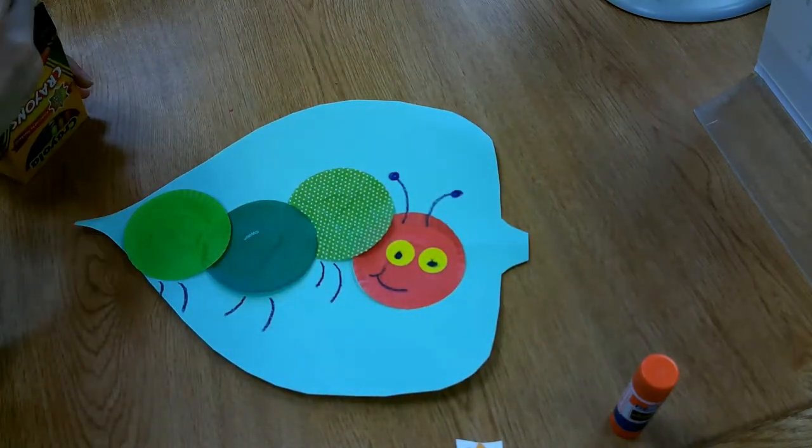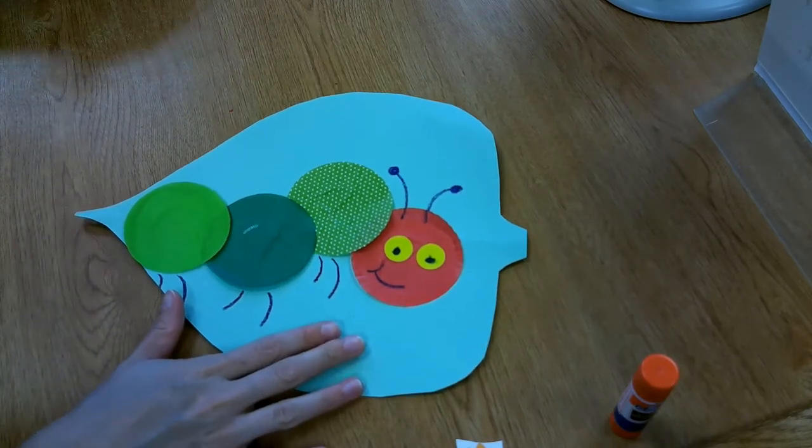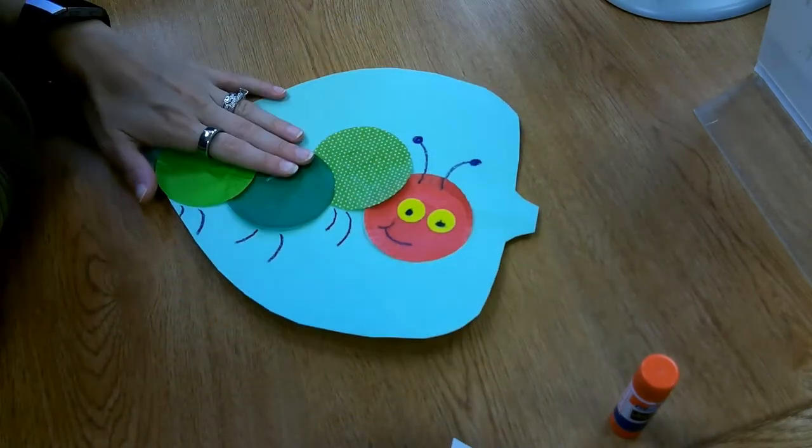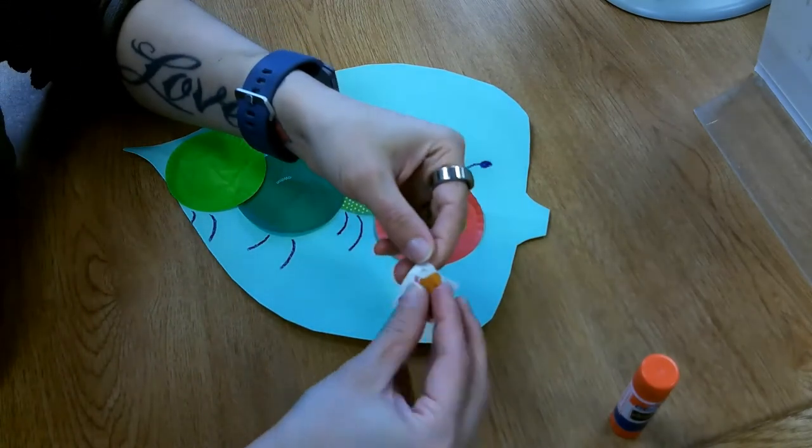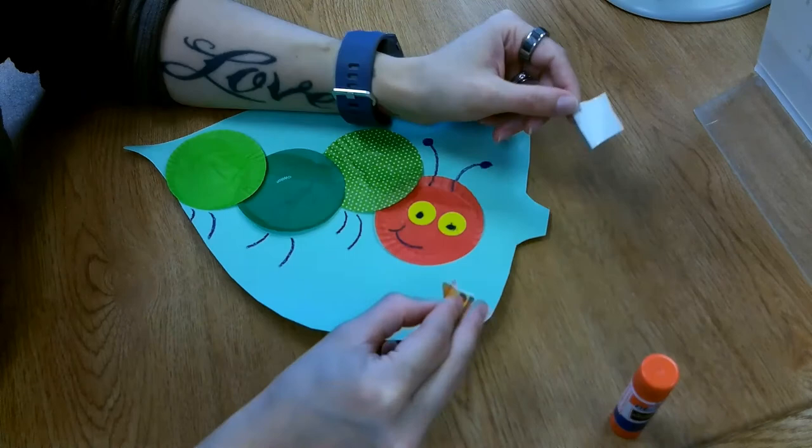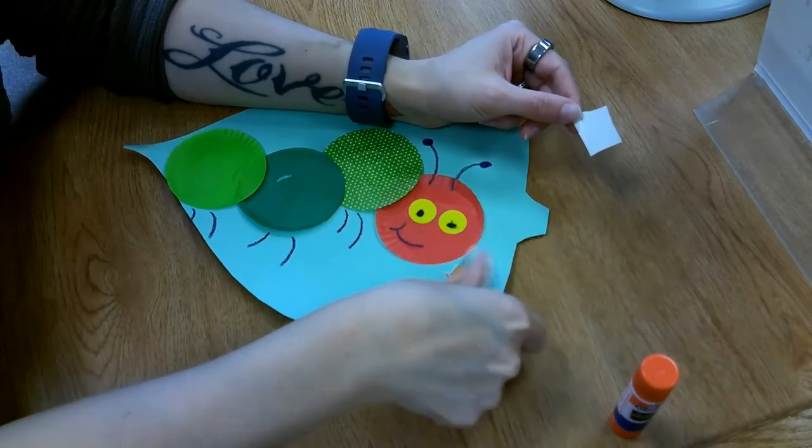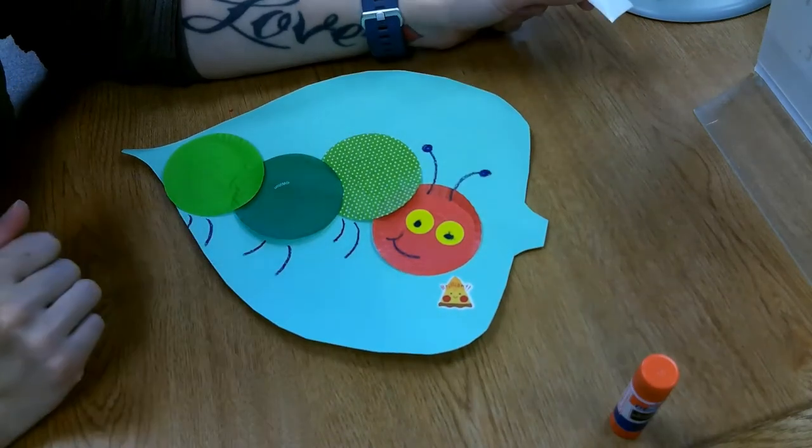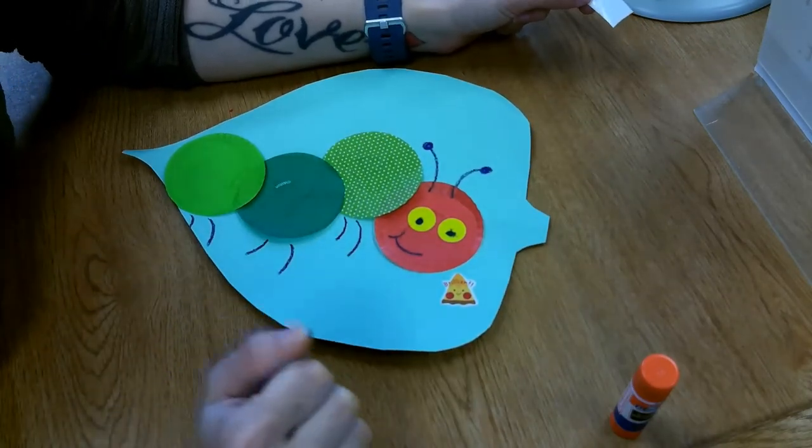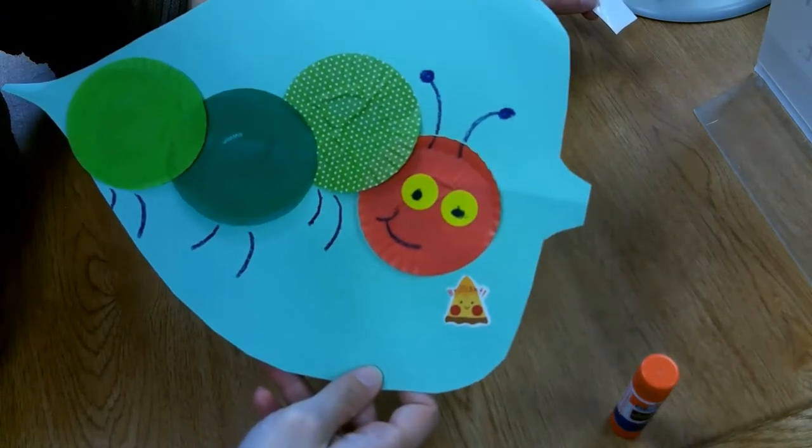We've got our caterpillar on a leaf. Last but not least, you can decorate your leaf, but we have a hungry caterpillar, right? So let's take our little scratch and sniff food sticker and put it right by his mouth so that he can munch down on that. And I had a pizza sticker, so my hungry caterpillar is going to chow down on some pizza.